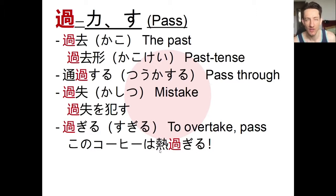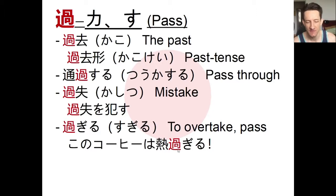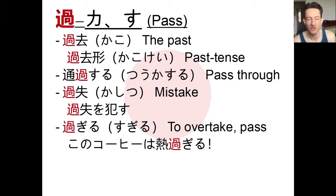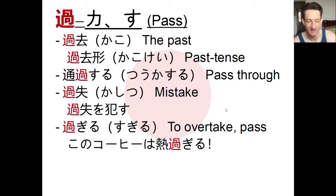I'm sure all of you watching are familiar with using 過ぎる — for example with i-adjectives: 寒すぎる, too cold, or 熱過ぎる, too hot. This is actually the kanji character for 過ぎる. It's often written in hiragana, but know that this character means 'to overcome.' Once you know the meaning of the character, you can see where the structure of using 過ぎる to mean 'too much' comes from, and how it makes a lot of sense.